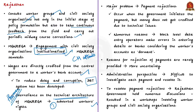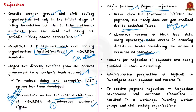The major problem is payment rejections. Payment rejections are like a bounced check — they occur when the government initiates the payment, but the money does not get credited due to technical issues. Reasons vary from block-level data entry operators making errors in entering account details of workers, to banks considering workers' accounts as dormant when not used for some time.